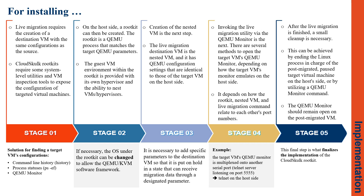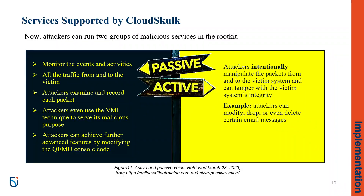And finally, the clean-up step. This could be achieved by ending the Linux process of the post-target virtual machine on the host side, or utilizing a QEMU monitor command. Now, the attacker can run two groups of malicious services in the rootkit: active and passive. In passive services, the attacker can monitor events, activity, and traffic, and even use VMI techniques to serve malicious goals. In active services, the attacker can manipulate packets to and from the victim system, such as modifying certain email messages.